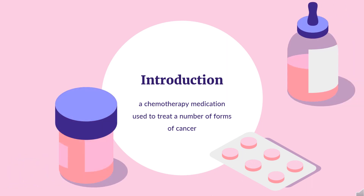What is carboplatin? Carboplatin, sold under the brand name Paraplatin among others, is a chemotherapy medication used to treat a number of forms of cancer. This includes ovarian cancer, lung cancer, head and neck cancer, brain cancer, and neuroblastoma. It is used by injection into a vein.